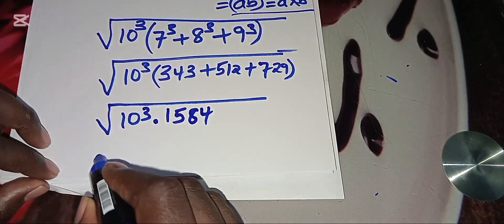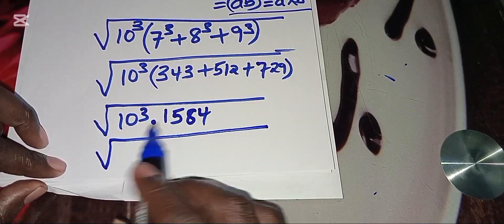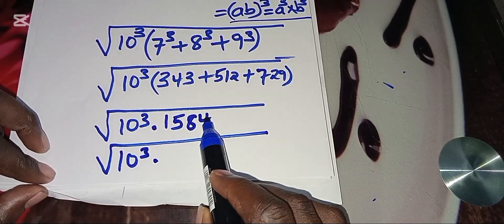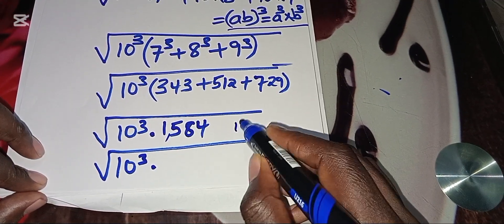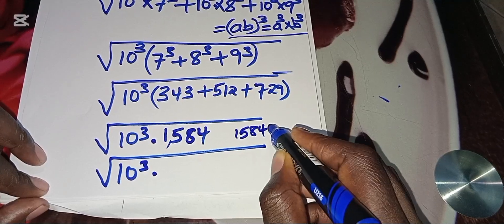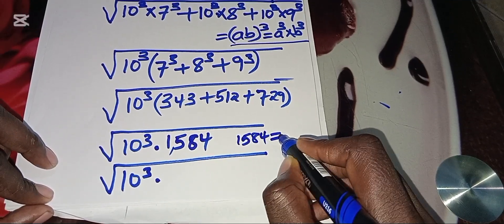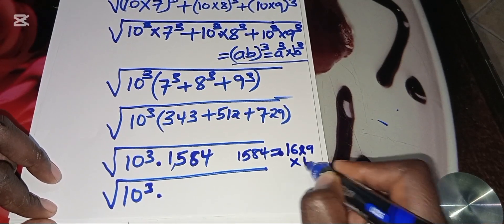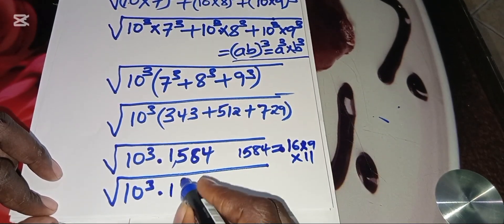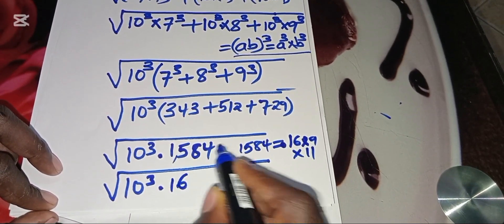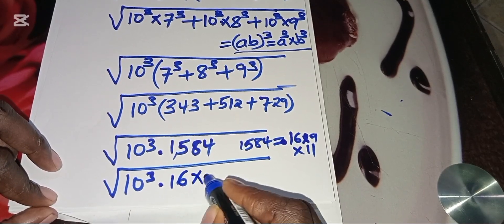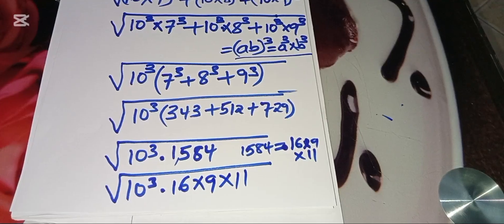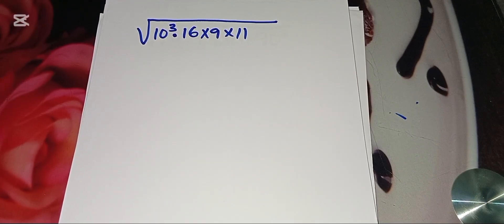We proceed: we have 10 cubed multiplied by 1584. Now 1584 can be expressed as 16 times 9 times 11. So we can write this as the square root of 10 cubed multiplied by 16 times 9 times 11.